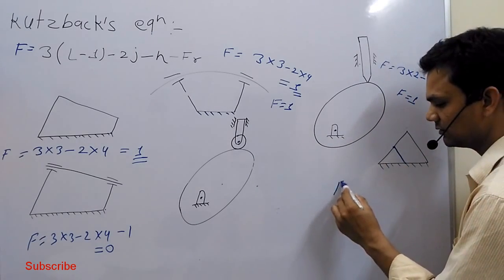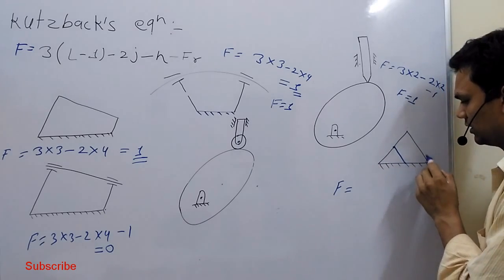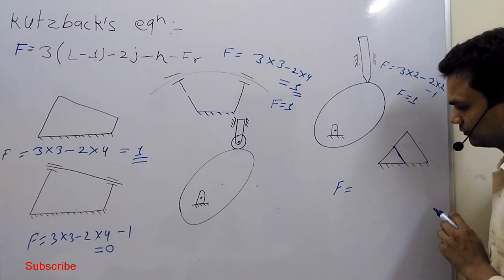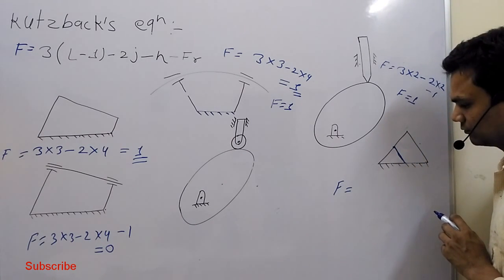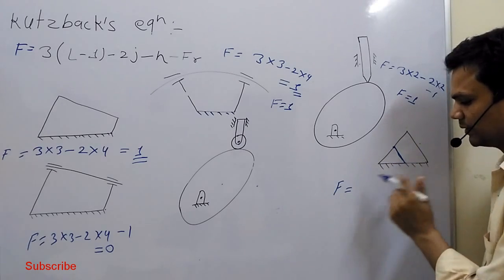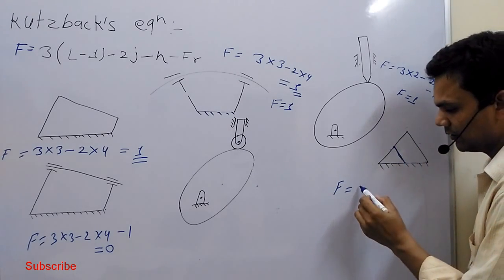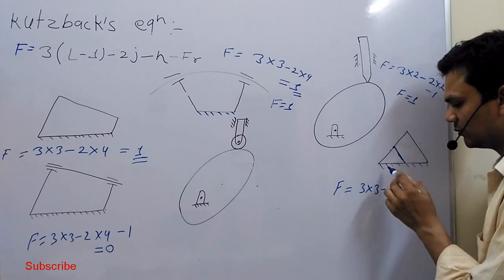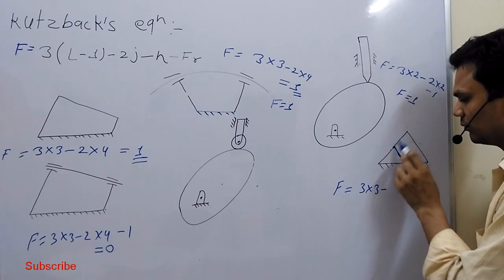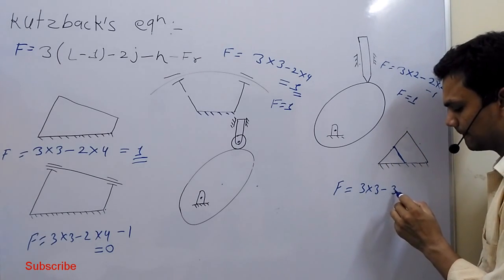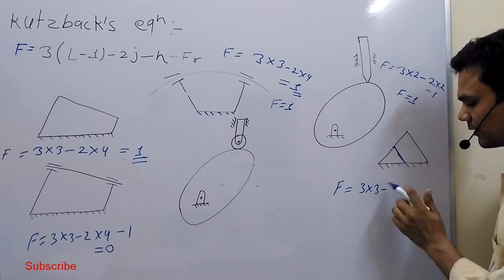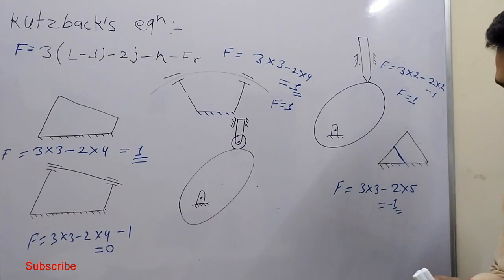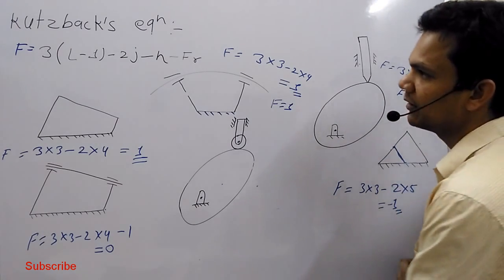To understand this: F is equal to — number of links: one, two, three, four. This is the superstructure. One, two, three, four. Now, L minus one — so three into three — minus number of joints, one, two, three, four, five — two into five. So you can see the degree of freedom is minus one. This is the superstructure — degree of freedom minus one.